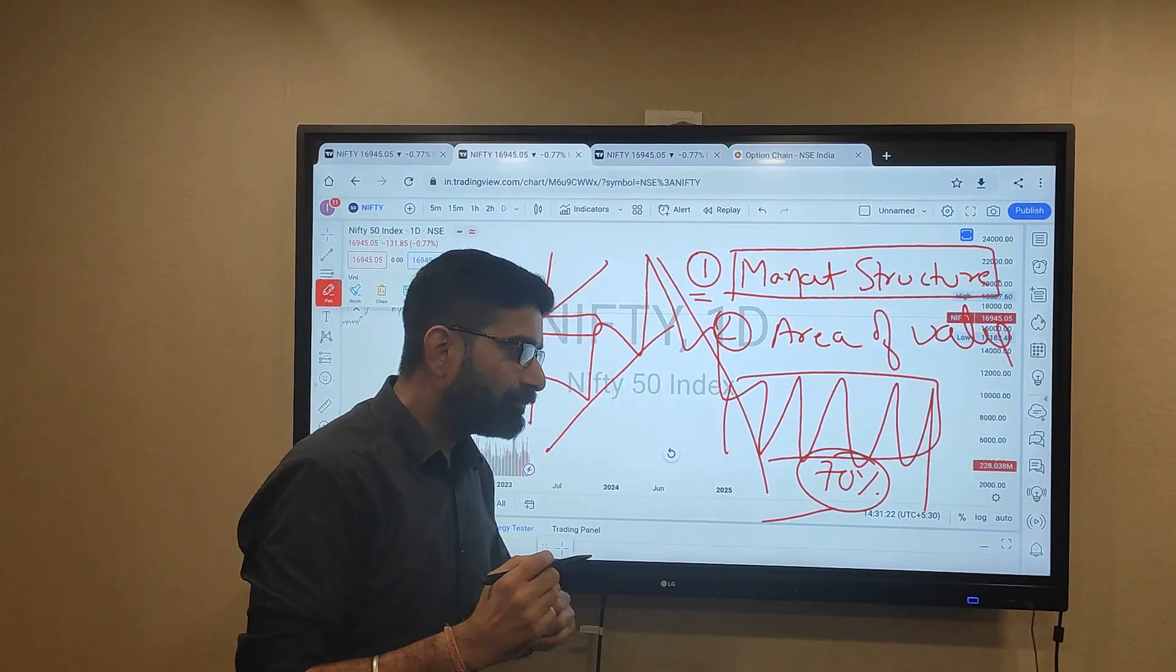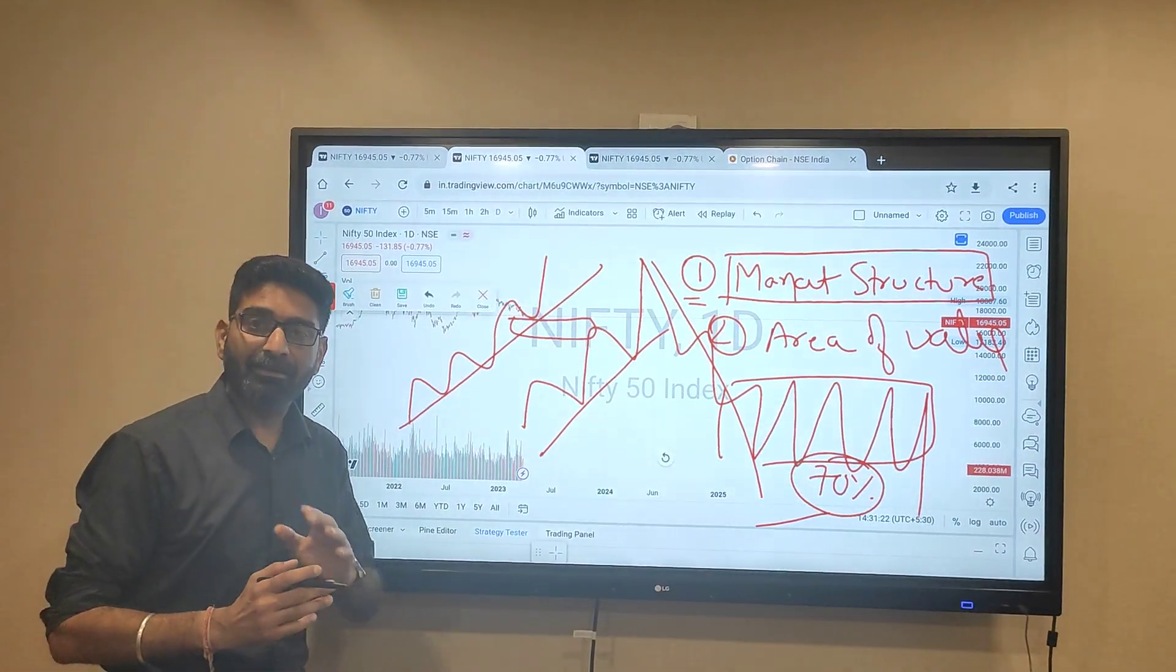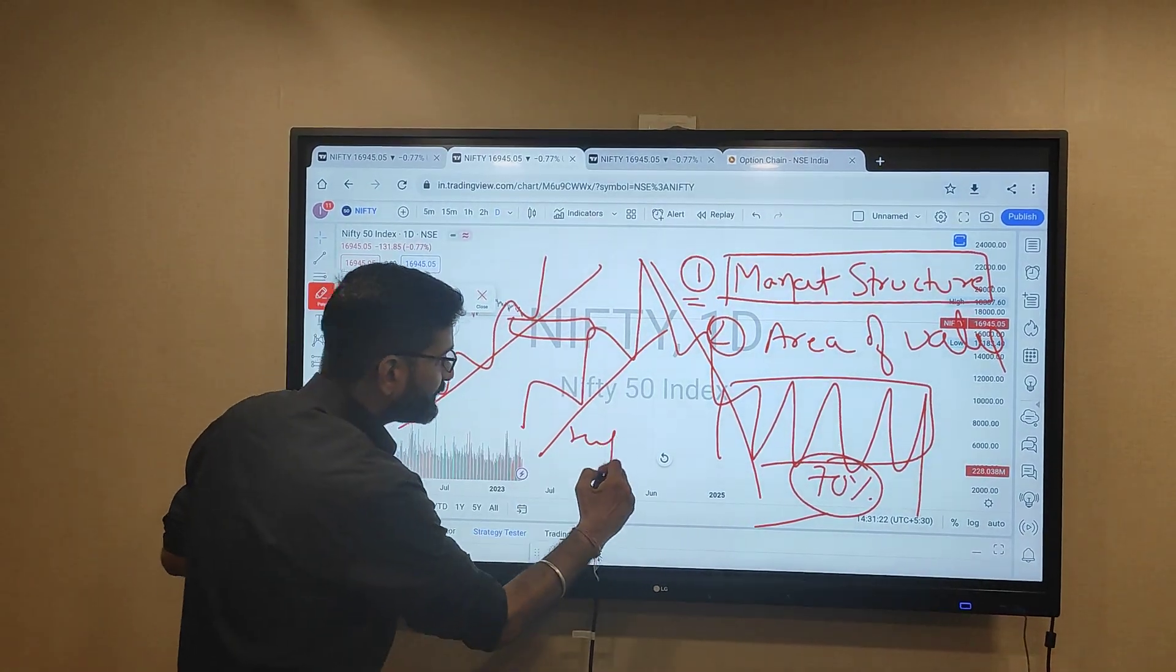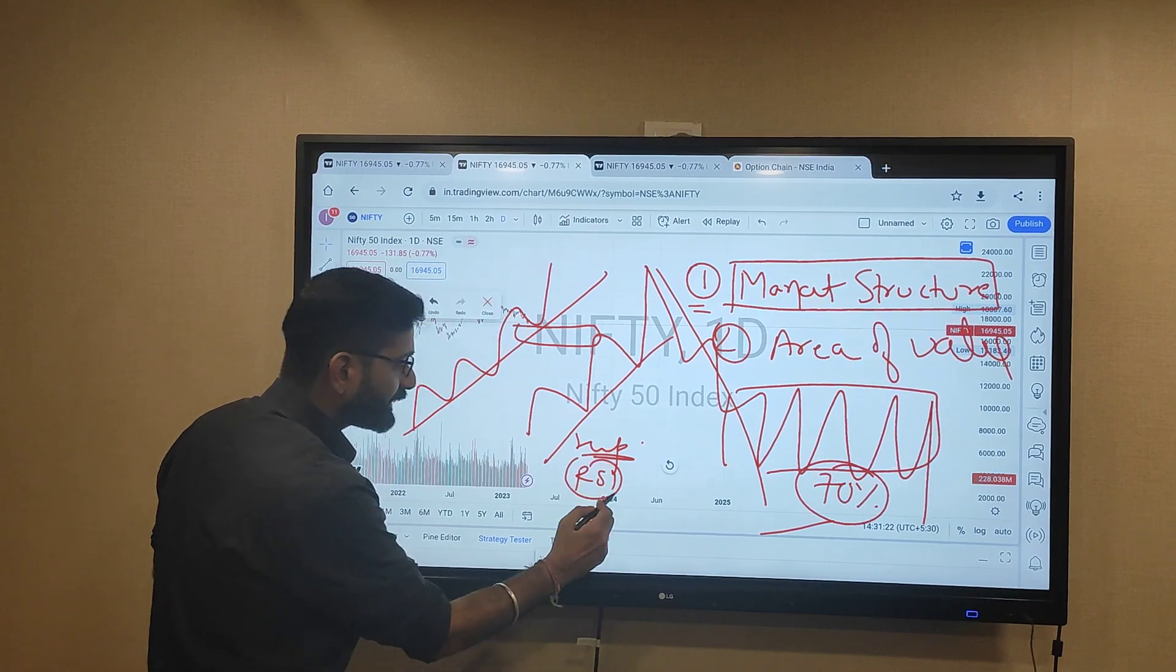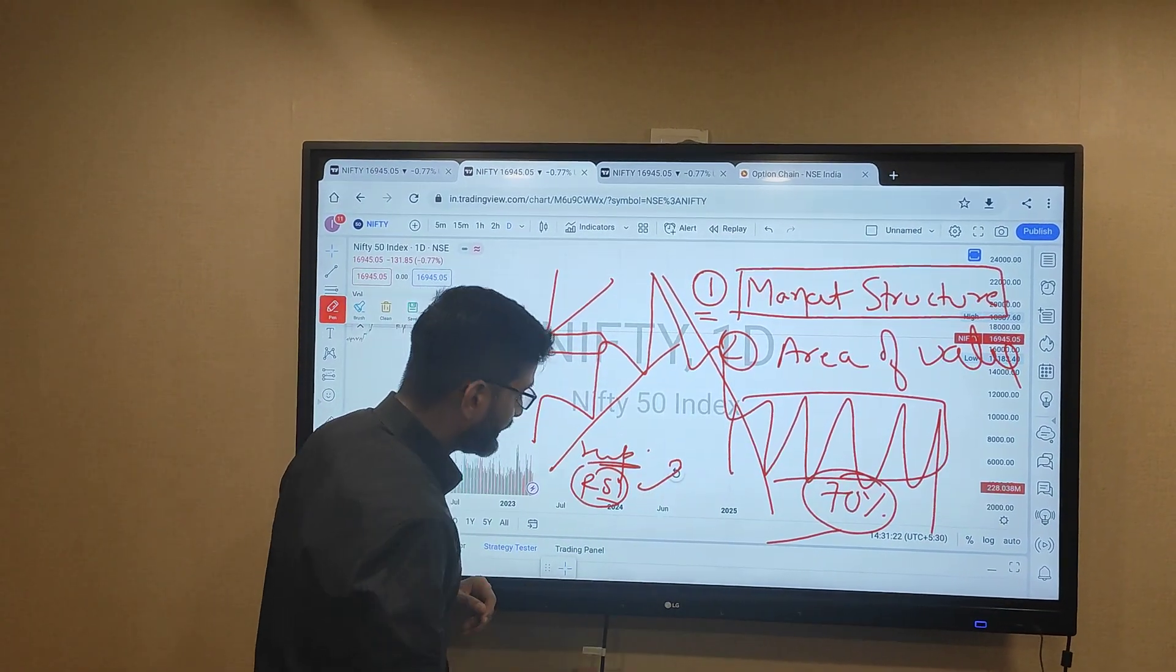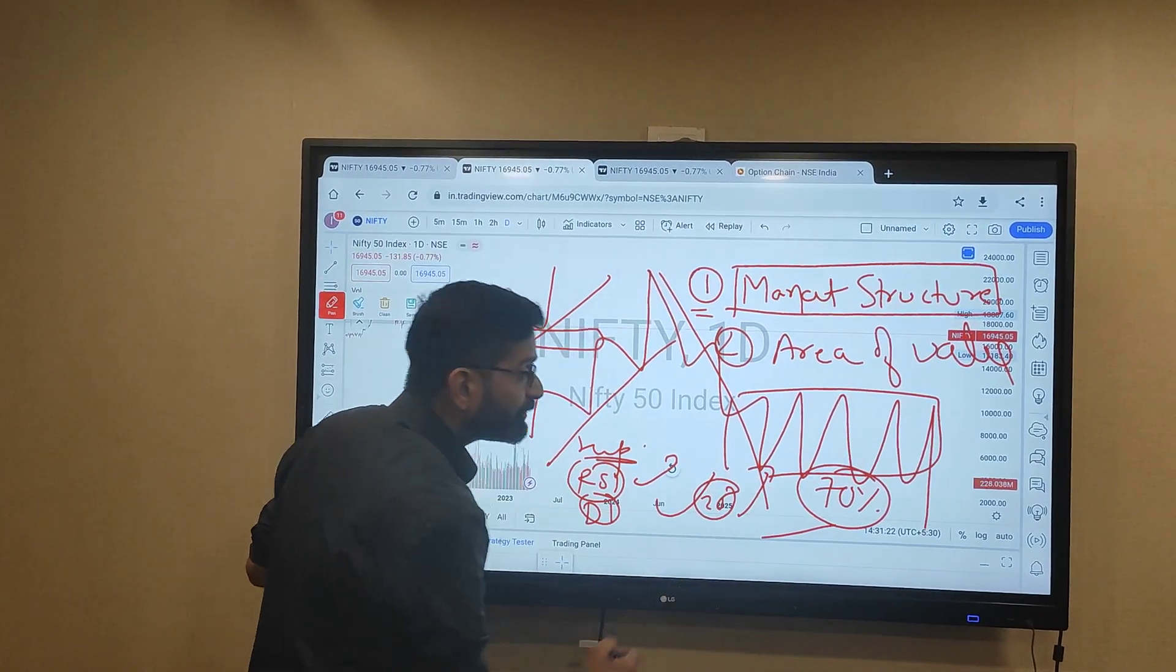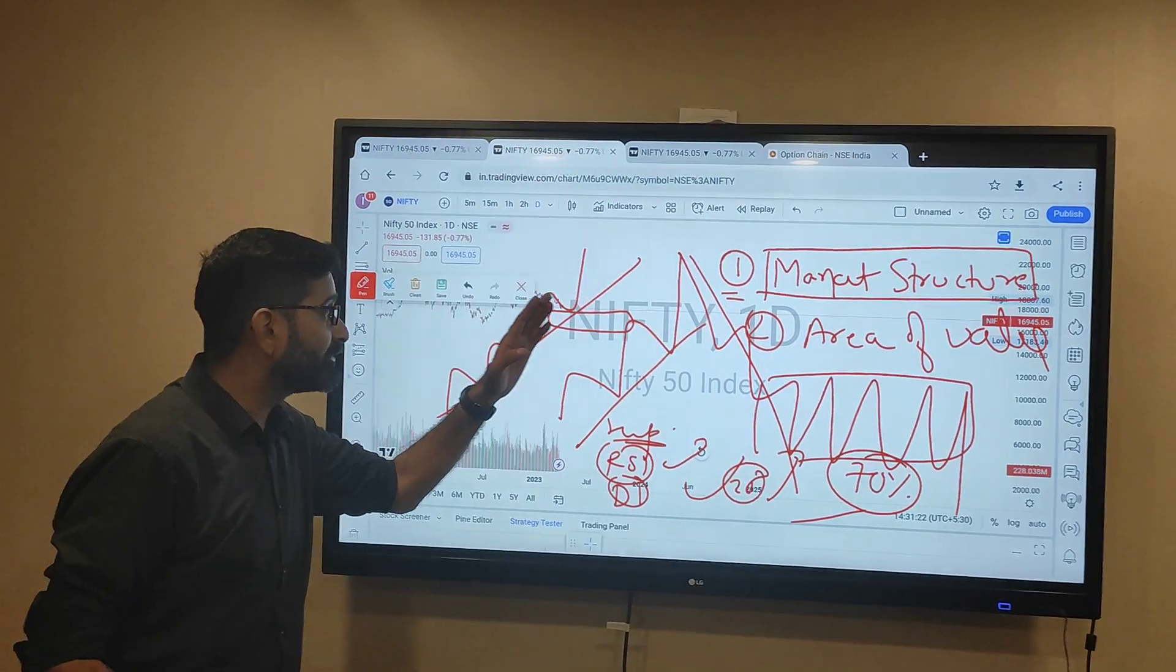Area of value means your important support-resistance, your parameters all together in a confluence area. Means your major support, your RSI indicating upside, your DI above 25. Means all the parameters - with the price section, with the volume, with the moving average.